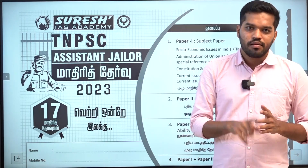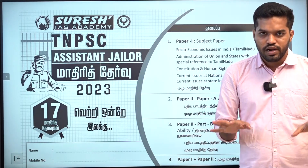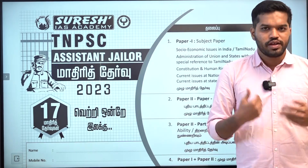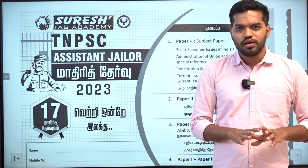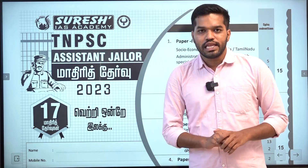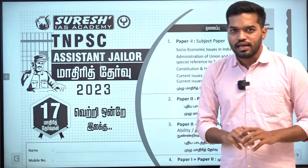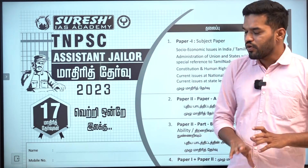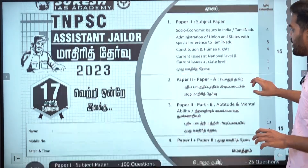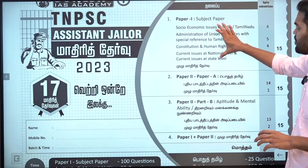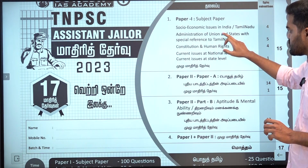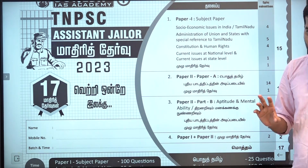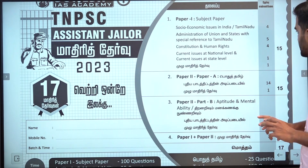In the 5th branch, we will be able to get the test full and fully free. Let's take a look at the paper: admin, human rights, current issues, national and state levels.